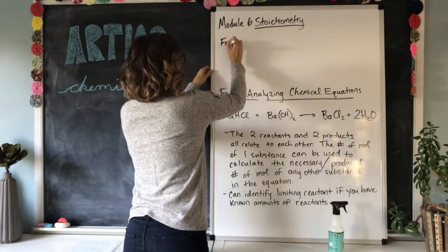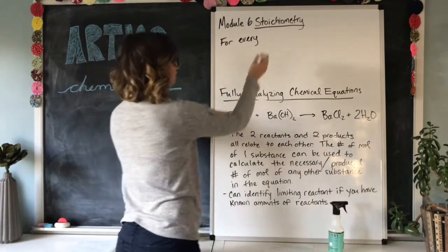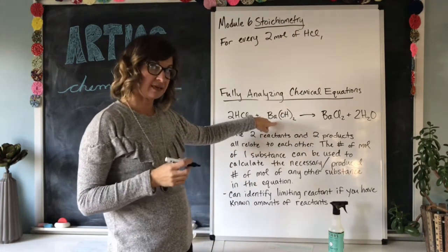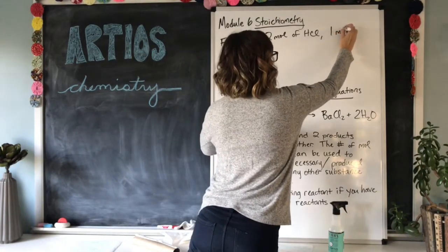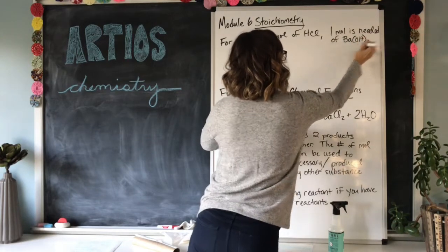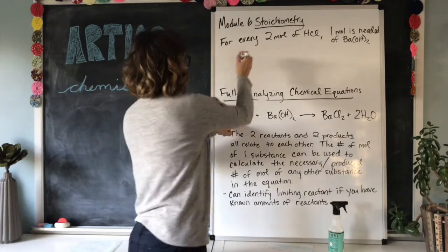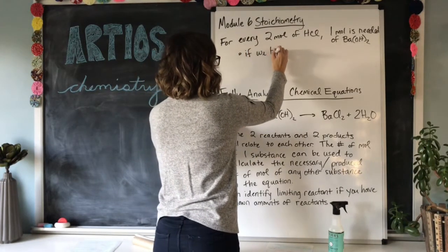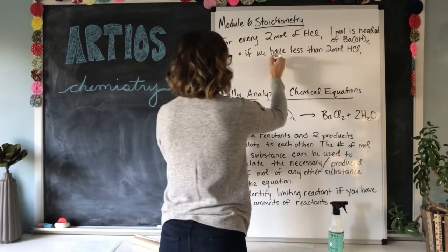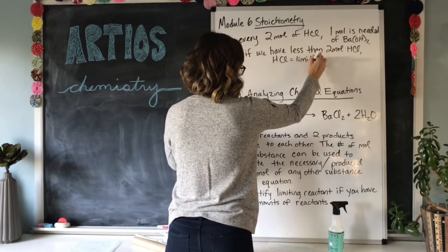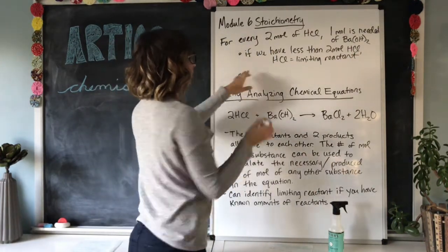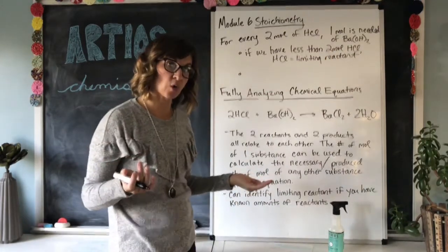Looking at our equation here, for every two moles of HCl, one mole of barium hydroxide is needed — that is the recipe needed of BaOH₂. So that means if we have less than two moles of HCl, HCl is the limiting reactant. Or on the flip side of that, if we have at least two moles of HCl but we have less than one mole of barium hydroxide...